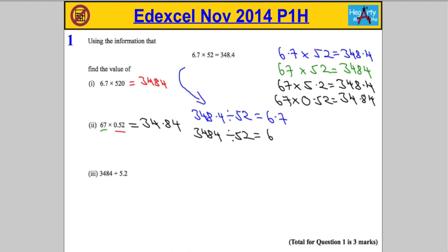And then similarly I need to make the 5.2 smaller. So let's write it down again: 3484 divided by 5.2. Now be very very careful here, and now I'm dividing by something that's 10 times smaller, which means my answer is going to have to get bigger, because the bit I'm sharing it into is a smaller amount.